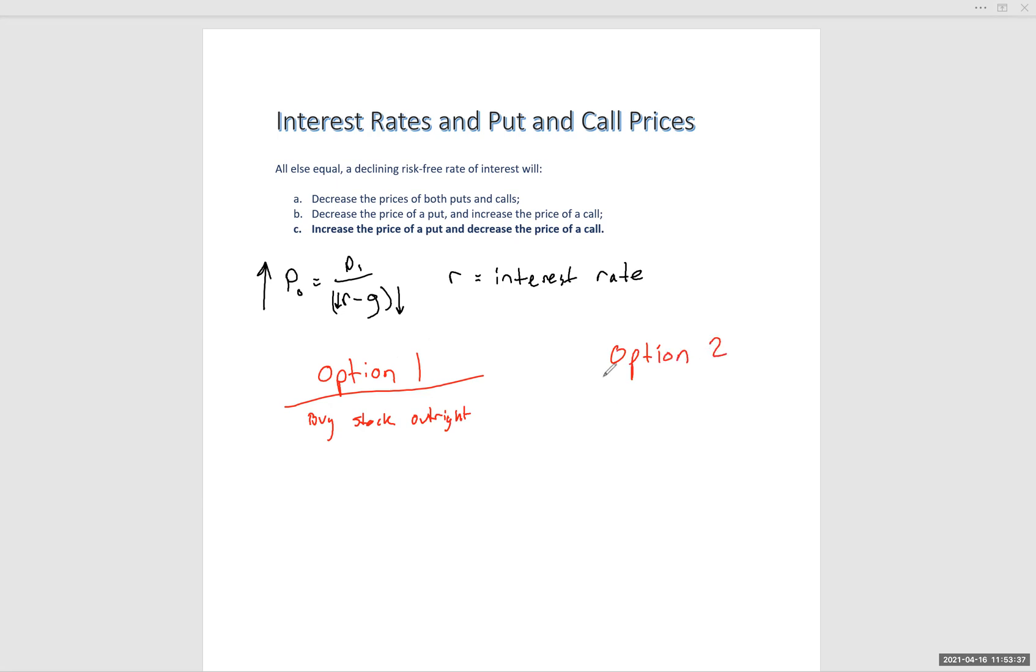Then we've got option two. And option two is buy a call option. So let's say, for example, the call option has a price of $5. And the stock has a price of, let's say, $50.